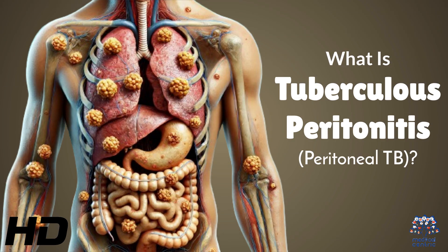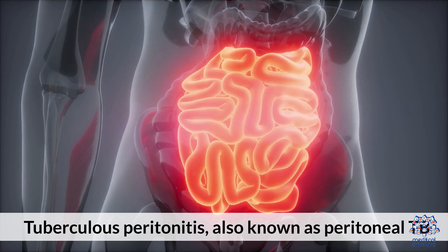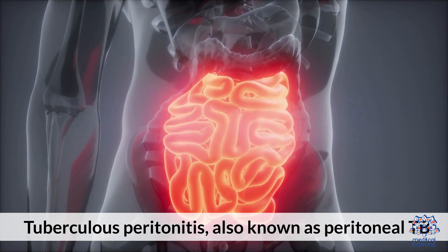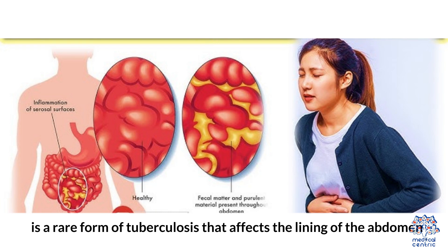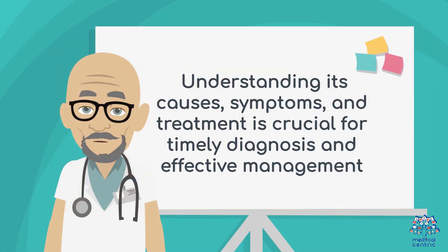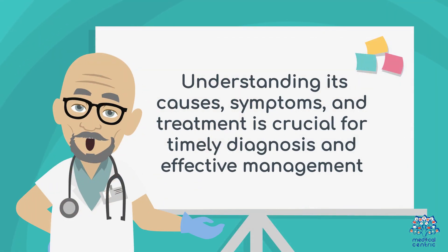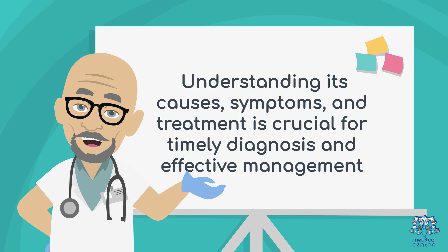Today's medical-centric topic is: What is Tuberculosis Peritonitis? Also known as Peritoneal TB. Tuberculosis peritonitis, also known as peritoneal TB, is a rare form of tuberculosis that affects the lining of the abdomen. Understanding its causes, symptoms, and treatment is crucial for timely diagnosis and effective management.